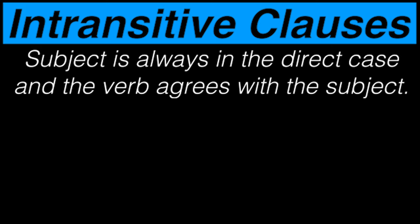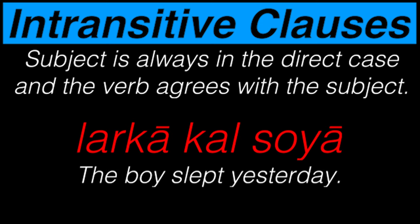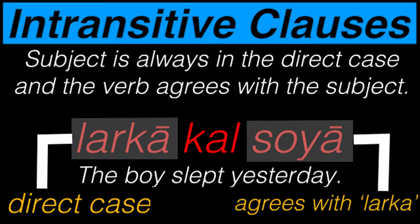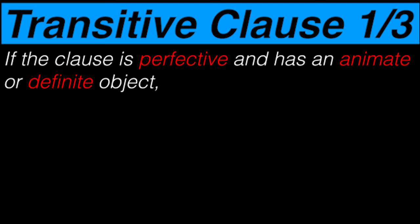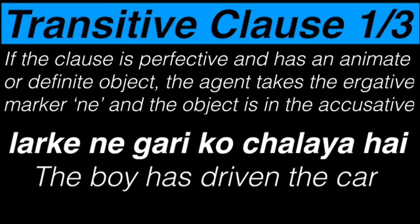Now let's look at case marking. When it comes to intransitive clauses, the rule is straightforward: the subject is always in the direct case and the verb agrees with the subject of the sentence. For example, larka kal soya means the boy slept yesterday. Larka is in the direct case and soya, from the verb sona meaning to sleep, inflects for masculine singular. As for transitive clauses, there are three possible ways this can go. If the clause is perfective and has an animate or definite object, the agent takes the ergative marker ne and the object takes the accusative marker ko. For example, the boy has driven the car is larka ne gari ko chalaya hai.